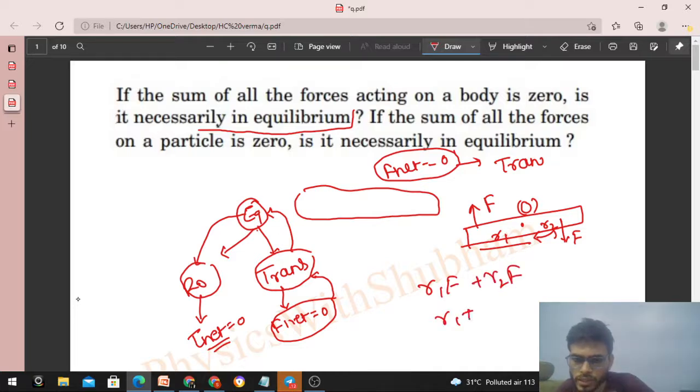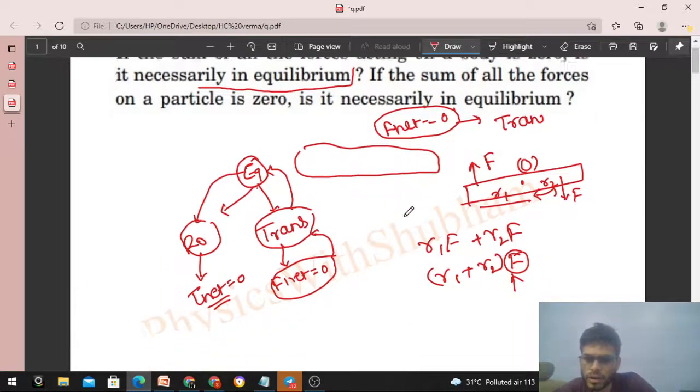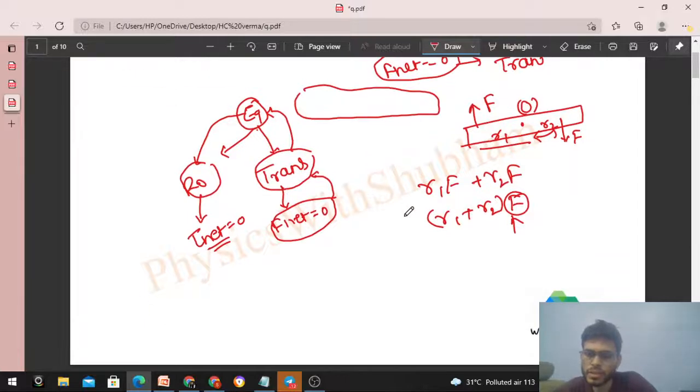You can say R1 plus R2 into F, which is the lever arm - the distance between these two forces - multiplied by F. So this way, net torque on the body will not be zero. Then this body will start to rotate about this point O.